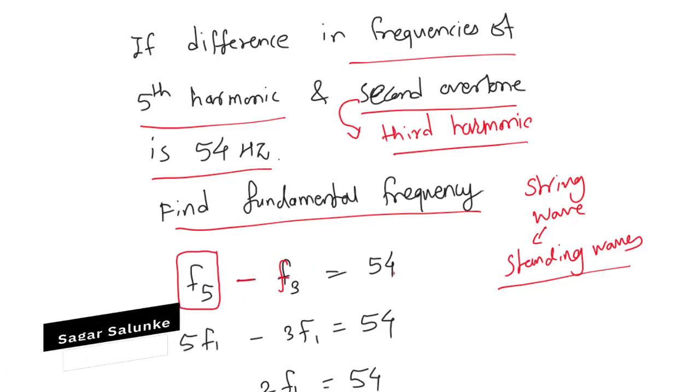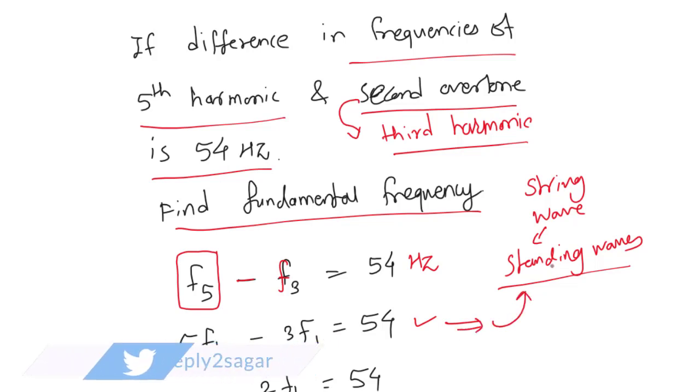We can write f5 as 5f1, where f1 is the fundamental frequency, minus 3f1, which is equal to 54. This applies for the standing waves on a string which is connected to both ends.